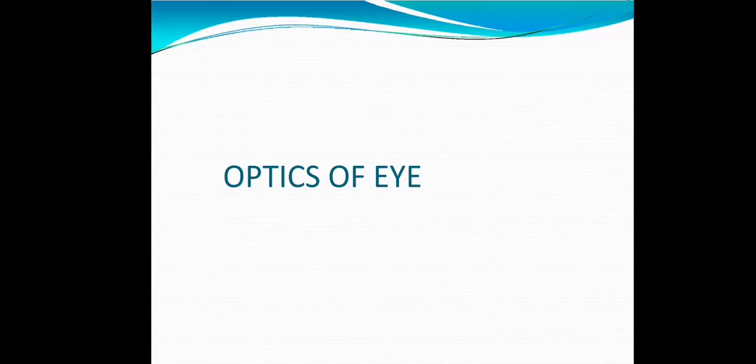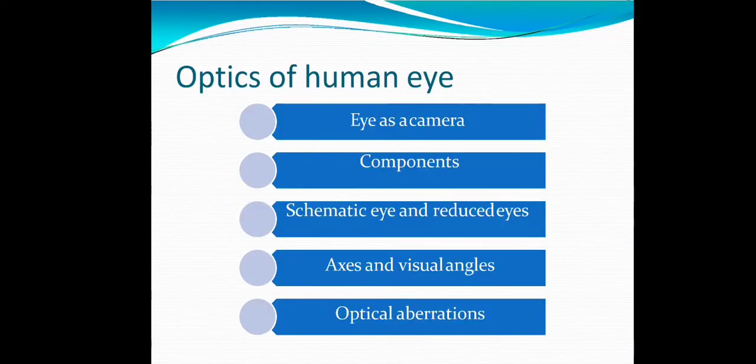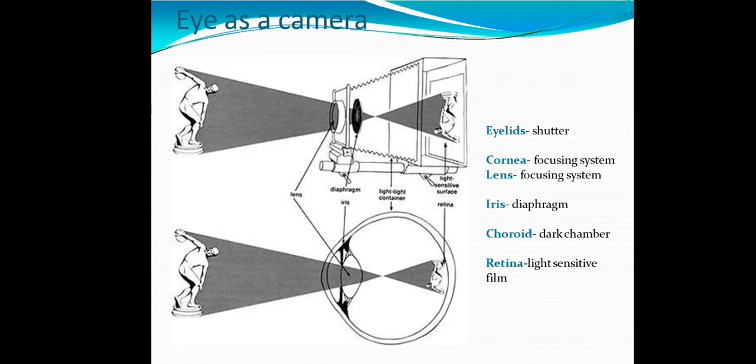Today we are going to discuss optics of eye. So optics of human eye is eye as a camera components, including the schematic eye and reduced eye, axis and visual angles, and optical aberrations.